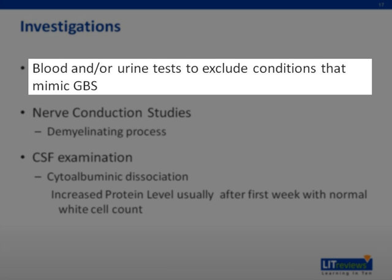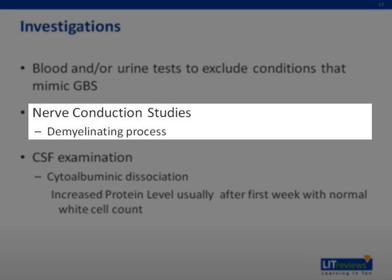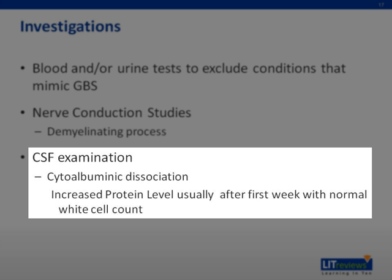Blood tests are performed to exclude conditions that mimic GBS. Nerve conduction studies will show a demyelinating type of neuropathy, though this may be normal in early stages. Cerebrospinal fluid examination usually shows increased protein level after the first week of illness. CSF white cell count is, however, normal — this pattern is called cytoalbuminous dissociation.